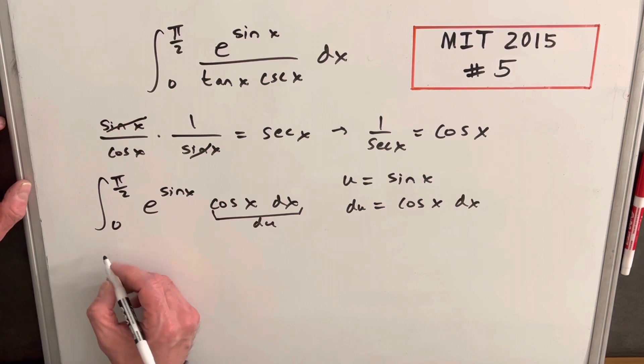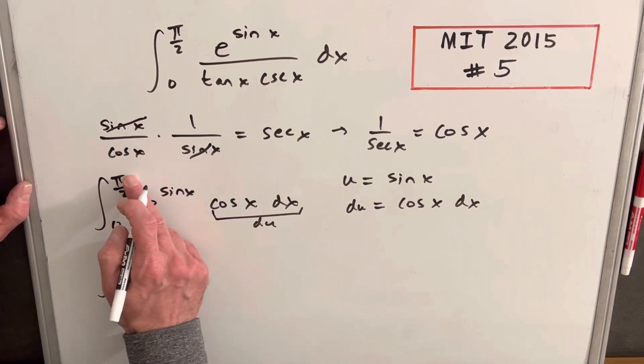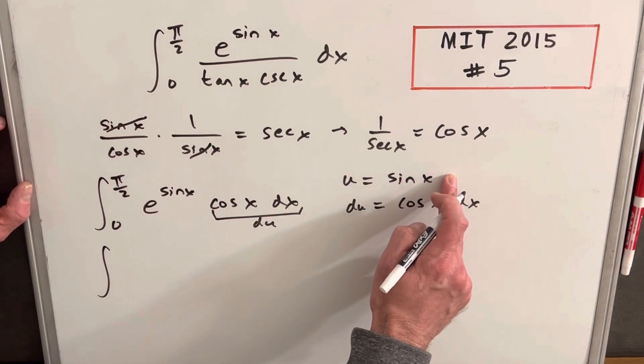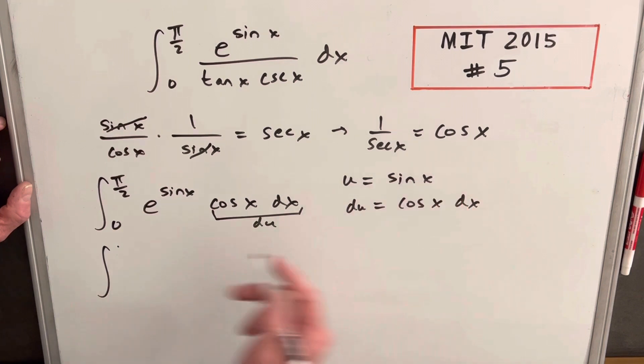But before I do that, we'll have to change our bounds. So first dealing with pi over 2, plug that in here. Sine of pi over 2 is going to be just 1. And then evaluating at 0, sine of 0 is just 0.